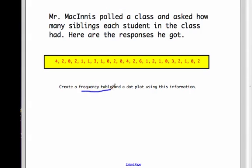Let's start with a frequency table. This word frequent, it's how often something occurs. So what they're looking for is how often do people say that they have four siblings, for example.